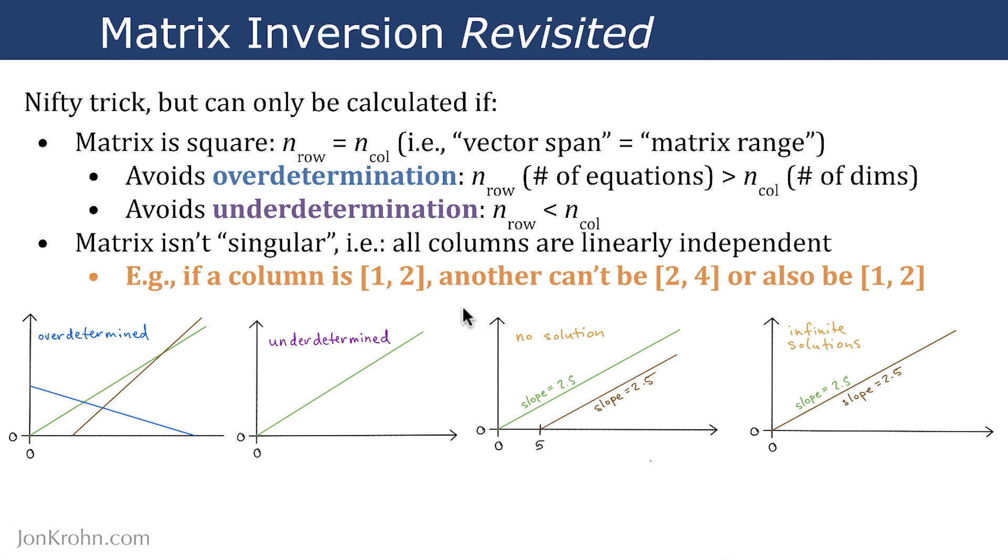You also can't have this situation where you have the same line equation twice as two different columns because then you have infinite solutions and so you can't solve for that as a single answer either. Both of these plots here represent singular matrices where we have linear dependence in the columns. So, for any of these four reasons, you can't invert a matrix.